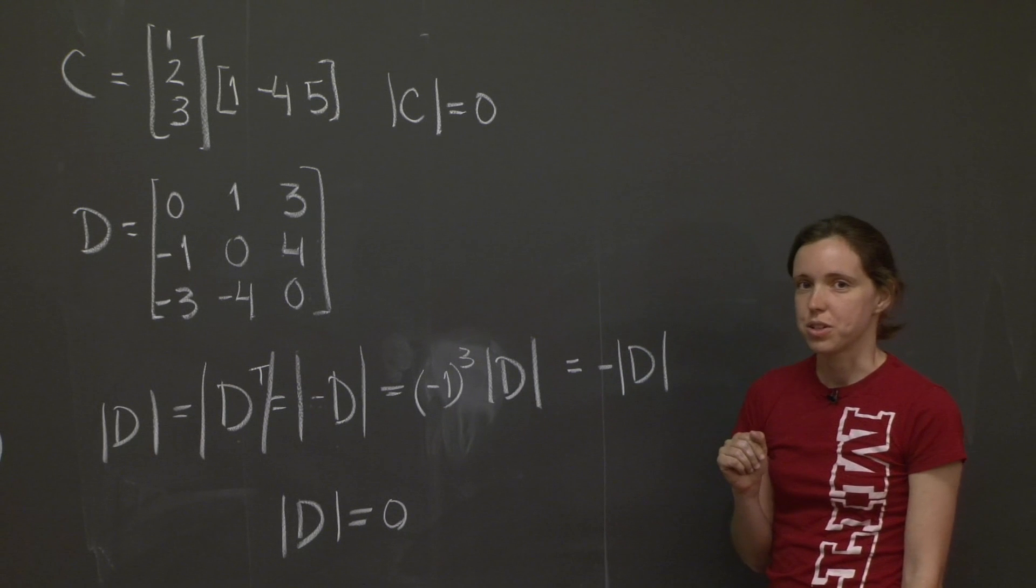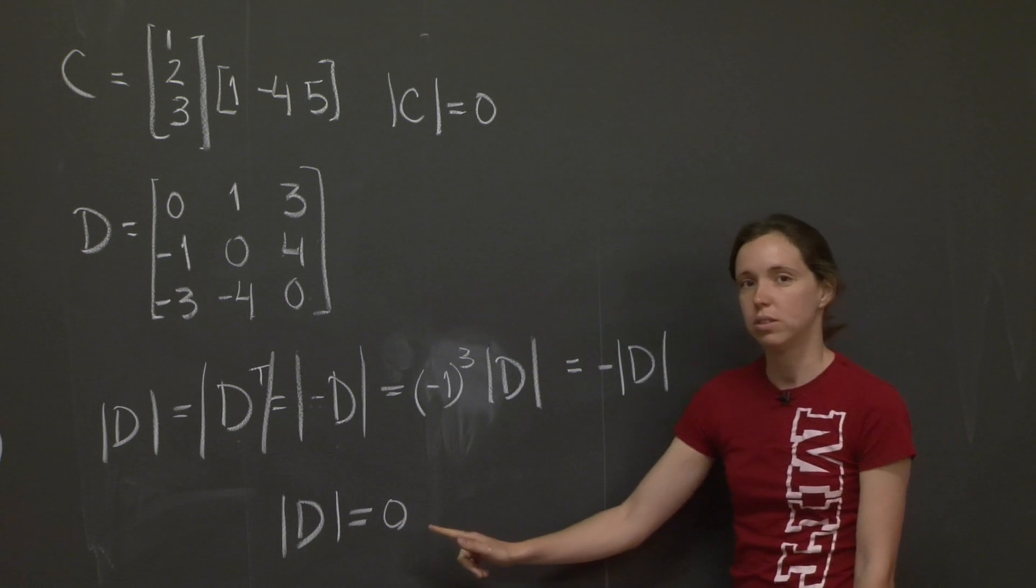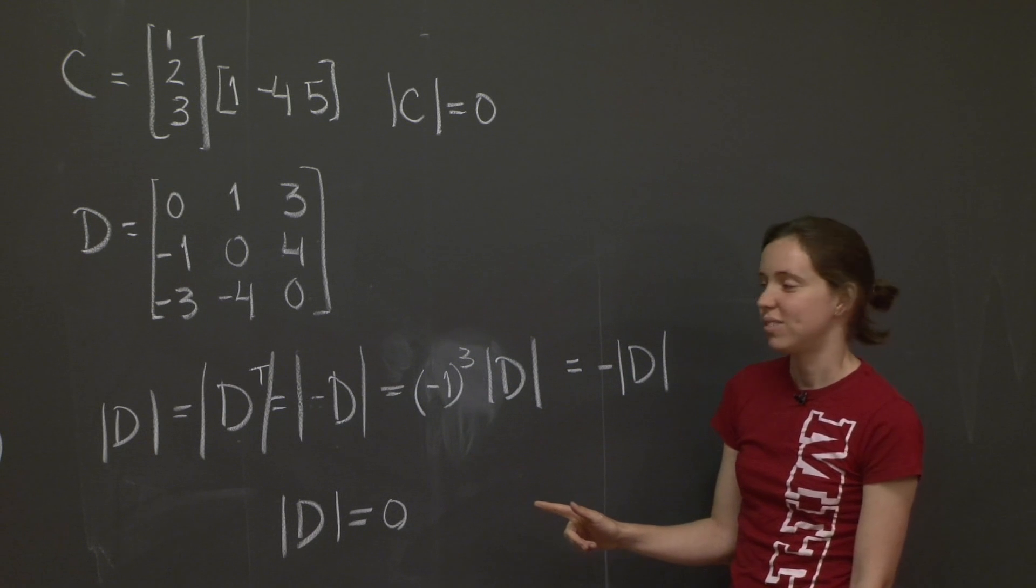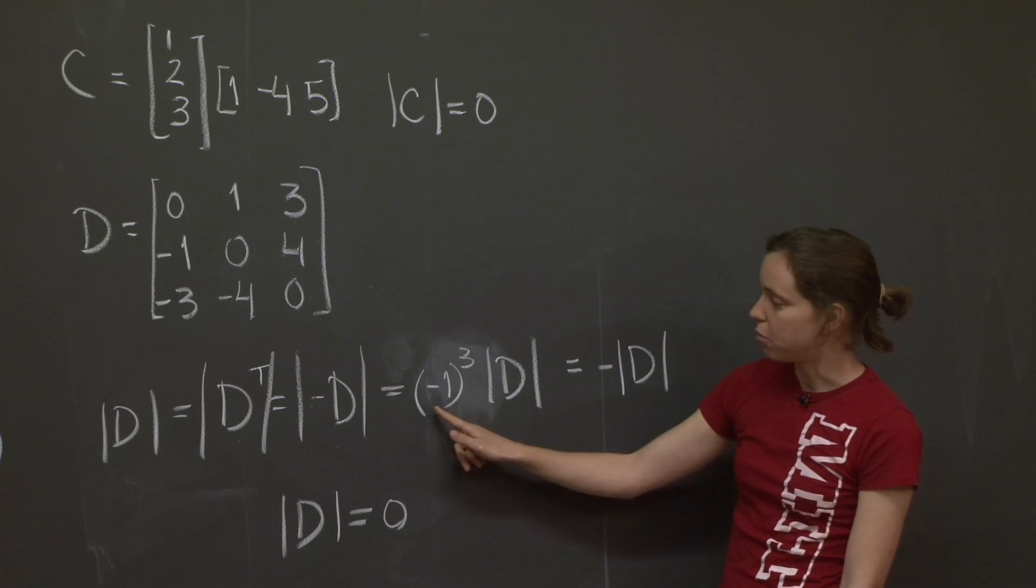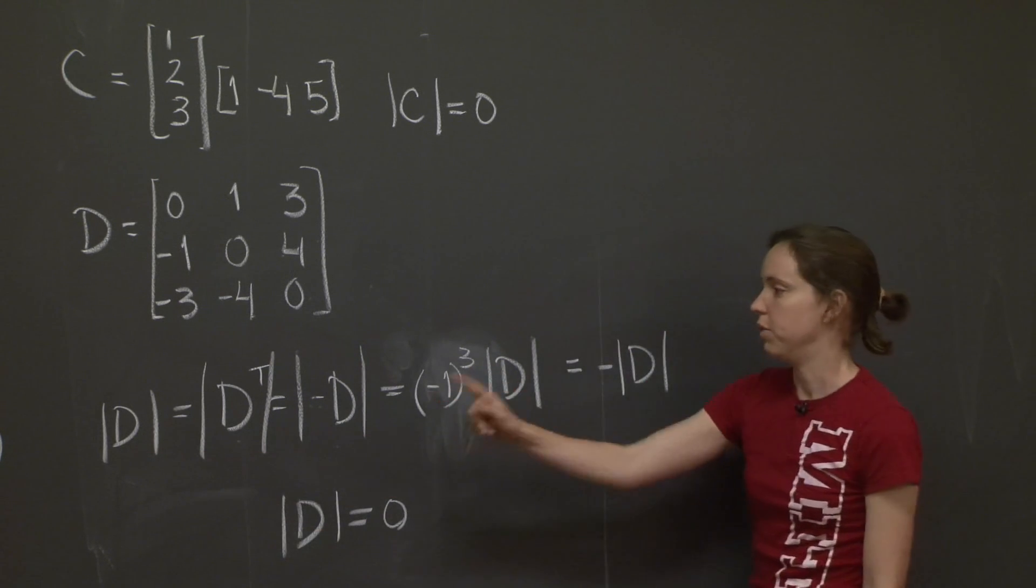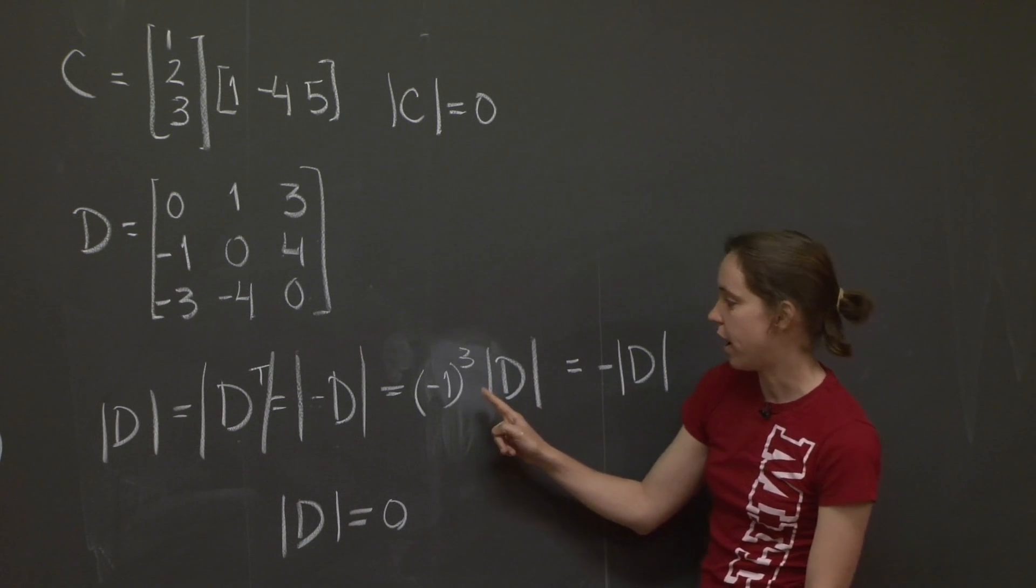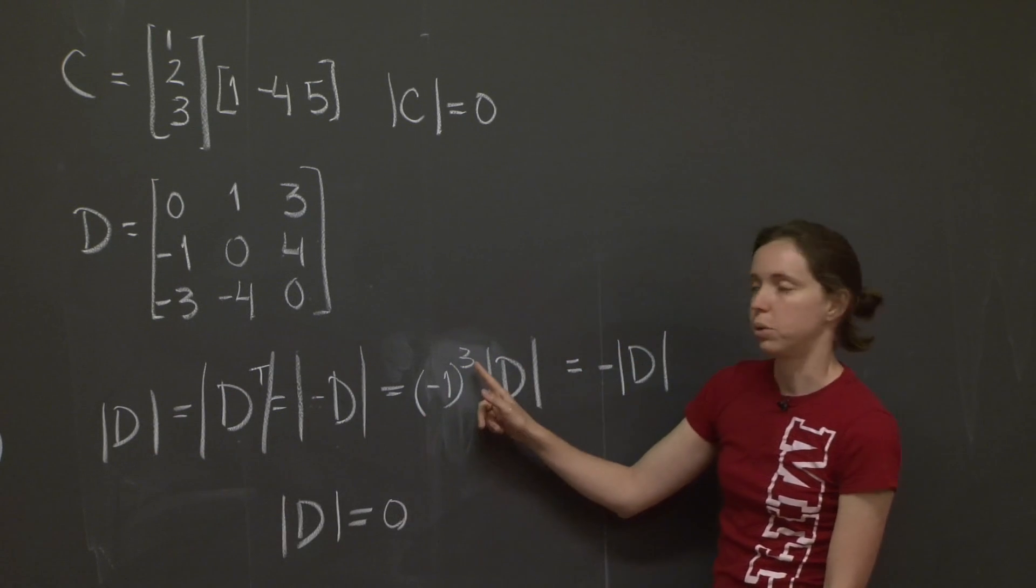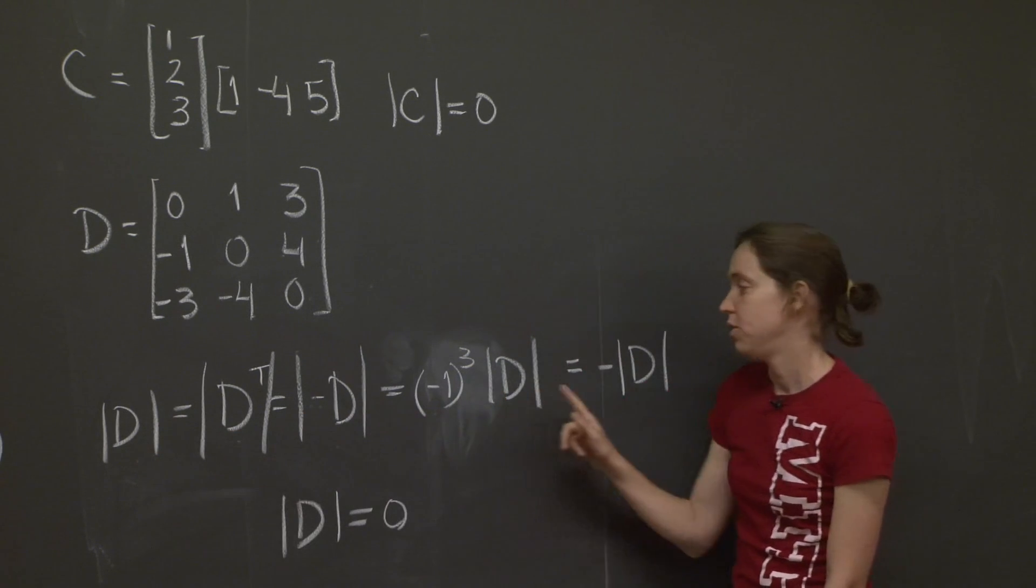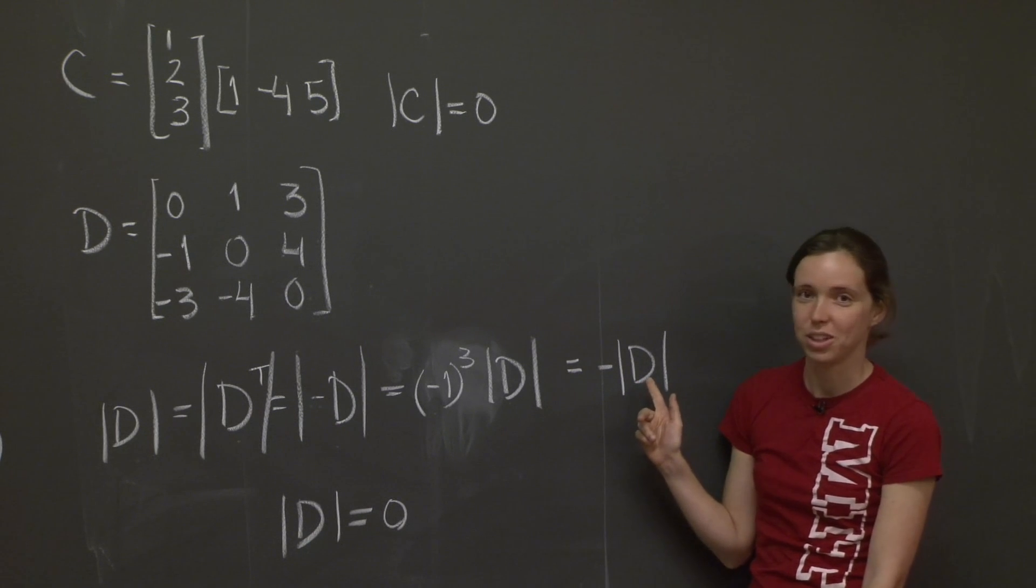Again, let me ask you one last question. Is it true that all skew symmetric matrices have the determinant equal to zero? It was true for this one. Is it true in every case? Well, the key factor here was that I had minus 1 to the third power, and I got a minus sign here, determinant of D is equal to minus determinant of D. What if this number had been an even number? Then I would just have determinant of D is equal to minus 1 to an even number, D. That's 1, so I would have determinant of D is equal to determinant of D. There's nothing I can say about that number. It can be your favorite number, not necessarily zero.